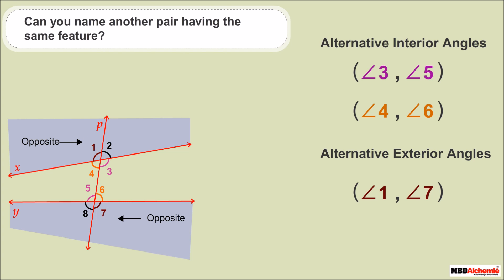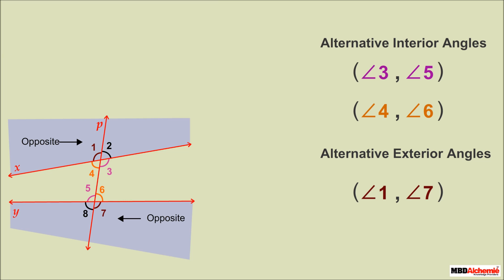Another pair of alternate exterior angles is angles 2 and 8.